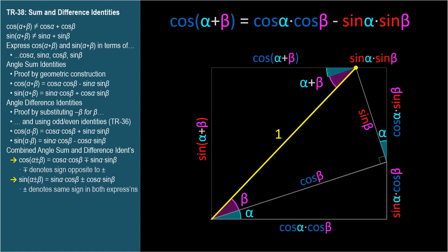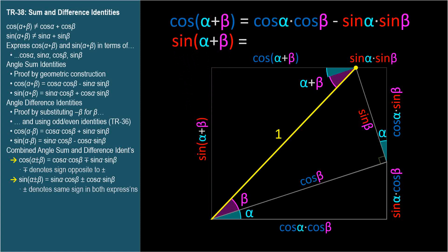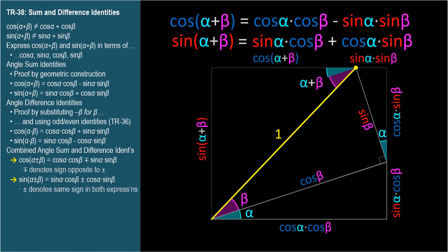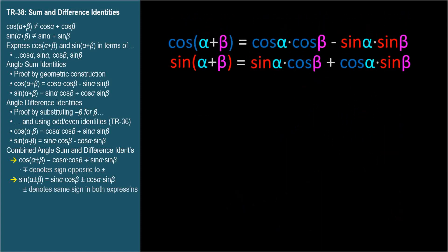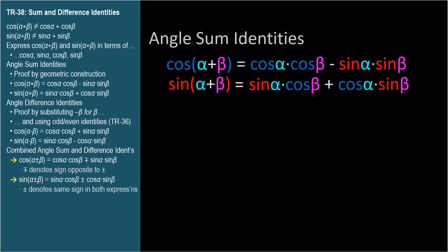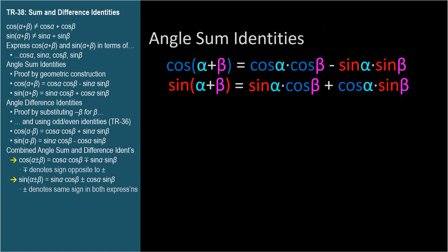This distance — the left side of the rectangle — equals sine(alpha plus beta), the other term we want to solve for. Its length equals the sum of these two lengths: sine alpha cosine beta plus cosine alpha sine beta. And here are the two identities shown earlier, but now we've proven them. They're the angle sum identities.